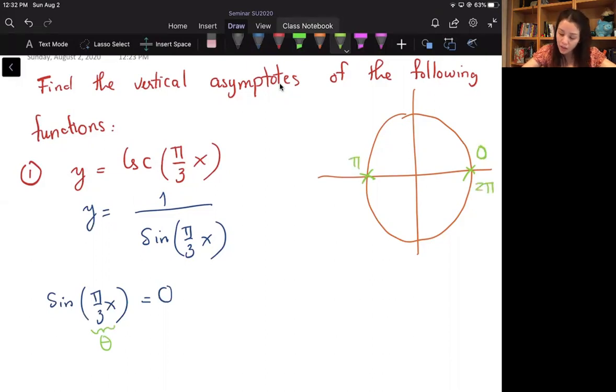And if I keep going, one more around is equal to zero at 3π, and then 4π, right? And if I keep going, I have 5π, and then 6π, etc.